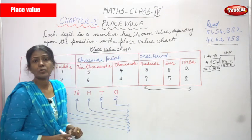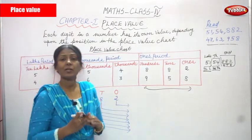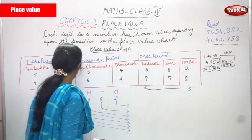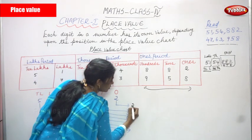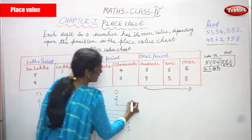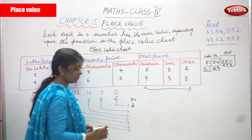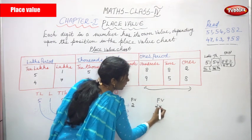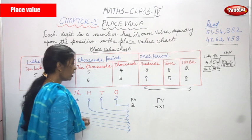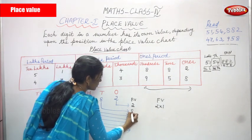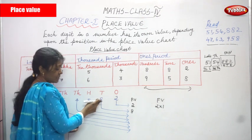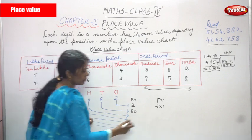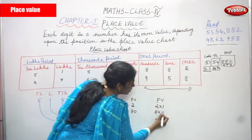Now we are going to see what is place value and face value - how to write the place value, then how to write the face value. The number 2 is in the ones place: place value is 2, and face value is 2 into 1. Next, 8 is in the tens place: place value is 80, and face value is 8 into 10.